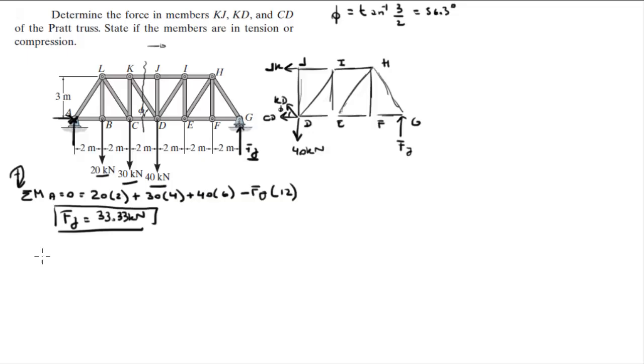Now, you know that the sum of the forces in the Y is equal to 0 and the only force that we don't know that's acting on the Y is Kd. So that's a good thing. So we got the 40 kN force going down, so minus 40 plus the 33.33 reaction, which is found as going up, plus Kd times the sine of phi, which we already found phi, is equal to 0.